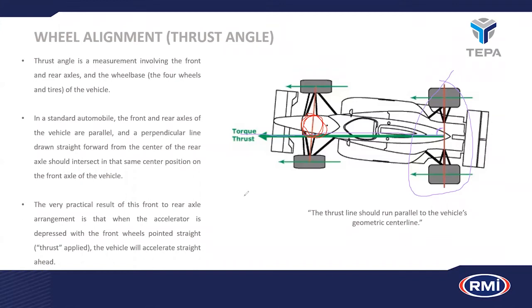If you don't have a straight thrust angle, the front axle is essentially fighting against the rear axle. In a rear-wheel-drive bakkie, for instance, the rear drive is pushing harder than it needs to against the front axle, increasing fuel consumption and making the vehicle unpleasant and difficult to drive. Keeping the wheels in a straight line is a very important part of vehicle operation.